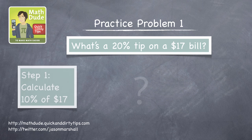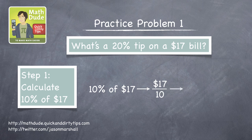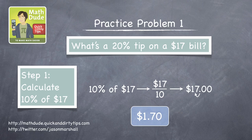The first step is to find 10% of $17. So we divide $17 by 10, moving the decimal point one digit to the left, and we find that 10% is $1.70.